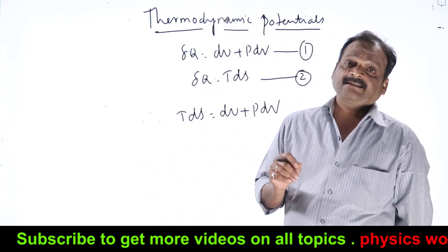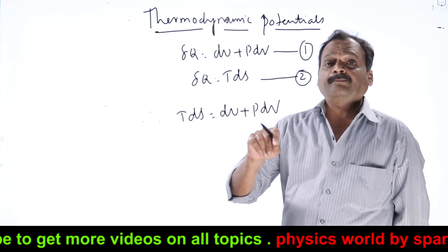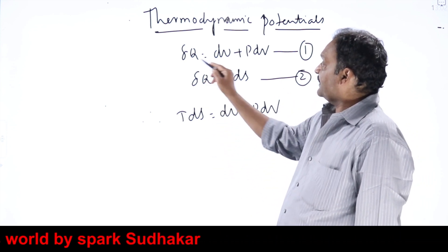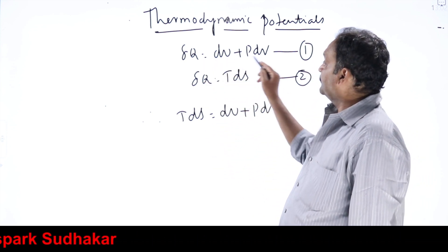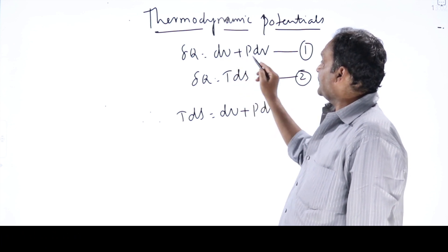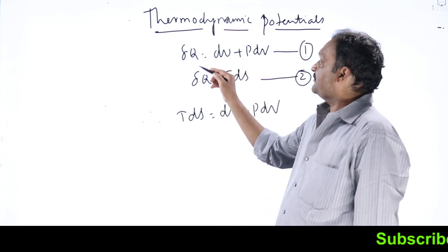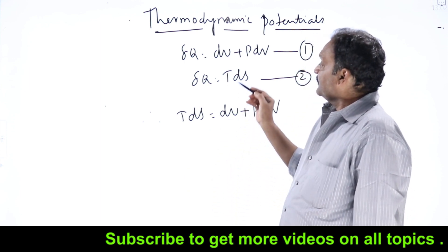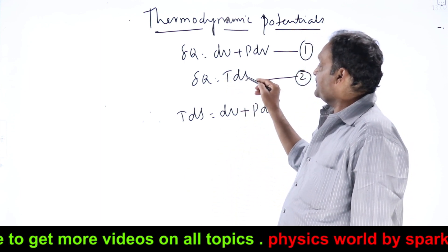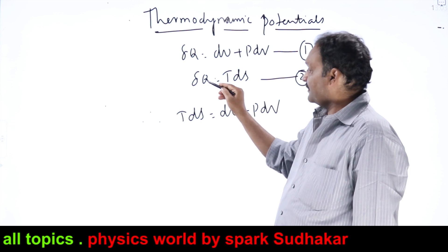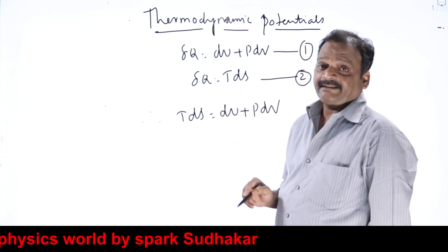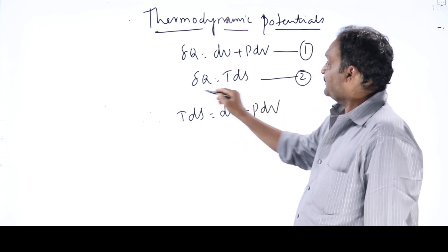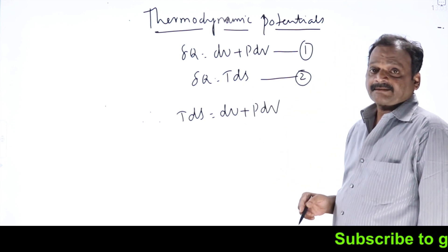The second law of thermodynamics has given the concept of entropy. Now, the first law equation is delta Q equal to dU plus P dV, where dU is change in internal energy, P dV is the external work done, and delta Q is the amount of heat given or taken from the system. The second law of thermodynamics has defined change in entropy as dS equal to delta Q by T. Therefore, I can write delta Q equal to T dS. This is the mathematical statement of the second law of thermodynamics.